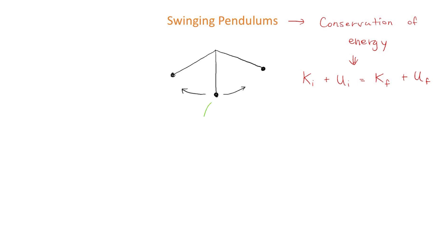Before we can start using this equation, let's look at the motion of a pendulum. There are three main components of a pendulum's motion. First, we have the minimum point — you might also hear this called the equilibrium position — it's when the pendulum is hanging straight down. And then we have the pendulum's maximum point, which is when it's swung all the way out to the right or all the way out to the left.